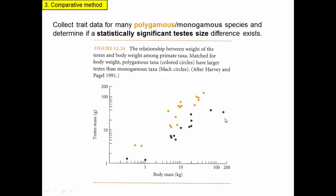This is now more than just an anecdote about chimps and gorillas. It's now a general pattern that polygamous species have larger testes than monogamous species, and that is much stronger evidence in support of some sort of sperm competition hypothesis.